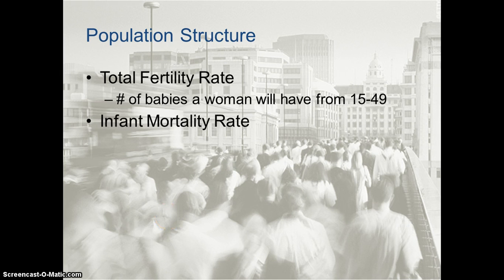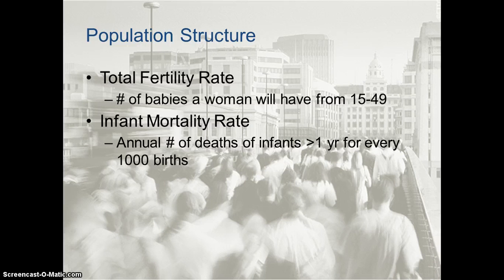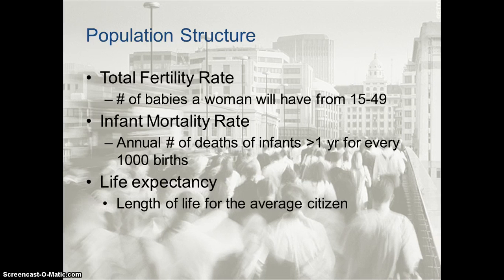Population structure also looks at the infant mortality rate — the annual number of deaths of infants less than a year old for every 1,000 live births. The highest infant mortality rates are in the least developed countries of sub-Saharan Africa, while the lowest are in Europe. Life expectancy at birth measures the average number of years a newborn infant can expect to live at current mortality rates. Life expectancy is most favorable in wealthy Western Europe and North America, and least favorable in sub-Saharan Africa — babies born today can expect to live around 80 years in Western Europe but only about 50 in sub-Saharan Africa.